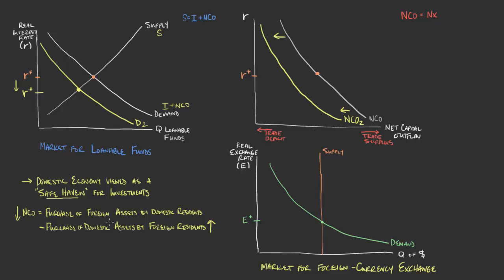It basically is as a result of the purchase of domestic assets from foreign residents. And so what would that actually go through? If we finish the analysis, this lower real interest rate should bring us down here, the lower real interest rate now that's marked in yellow. This brings us to this point here, which is now a lower supply of dollars, a lower supply of dollars, and I'll mark that as supply two, in the market for foreign currency exchange.